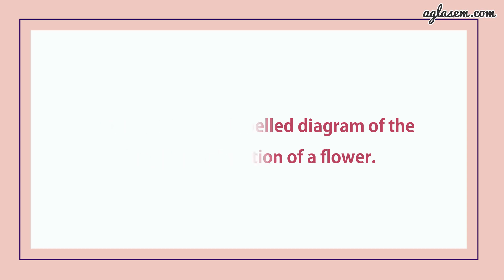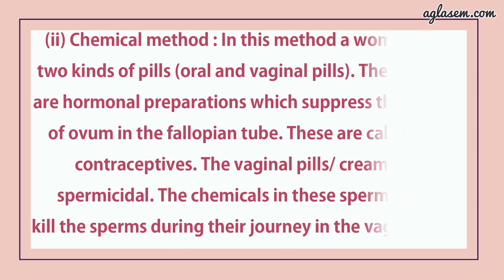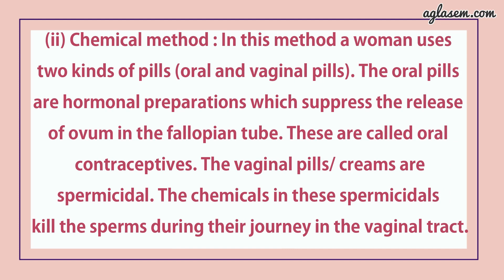Question number 8 says: what are the different methods of contraception? Answer: first, barrier method — in this method, diaphragm and cervical caps are used. These prevent the entry of sperms in the female genital tract during sexual intercourse. Second, chemical method — in this method, a woman uses two kinds of pills. The oral pills are hormonal preparations which suppress the release of ovum in the fallopian tube; these are called oral contraceptives. The vaginal pills or creams are spermicidal — the chemicals in these spermicidals kill the sperm during their journey in the vaginal tract.